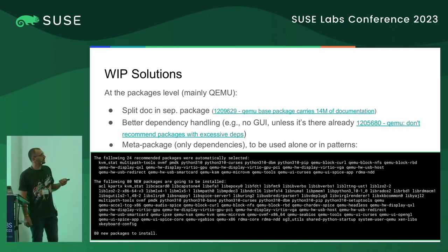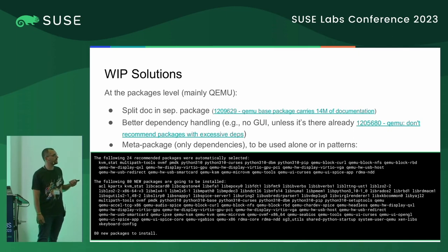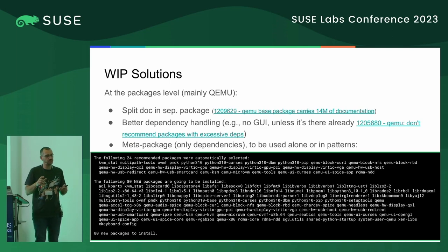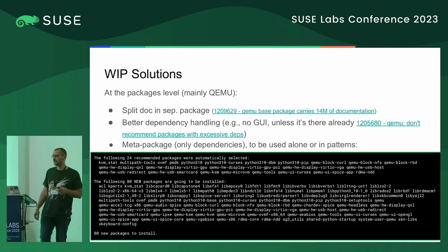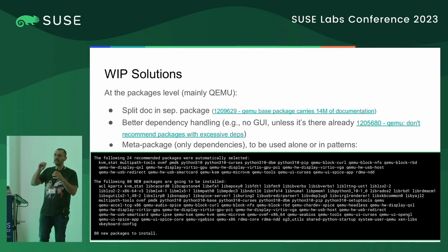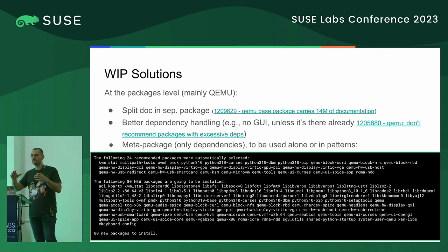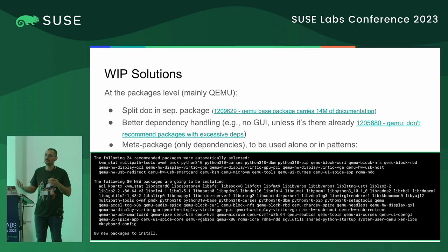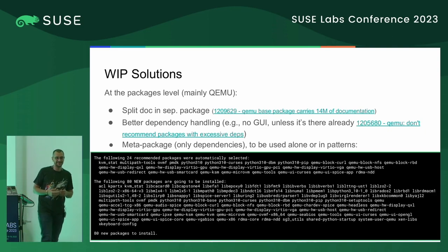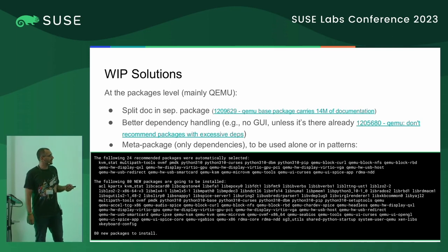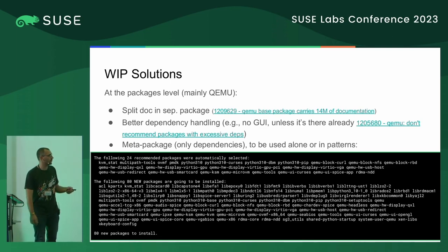In the upcoming QEMU 8 package for Tumbleweed — it's already there, even in previous versions, but doesn't work very well yet — there is a meta-package called qemu-headless. It has no files, only dependencies, and it's where I'm trying to get the right mix between requires and recommends. Maybe at least some of you can read it on the slide, so I take that as a sign it's already improving.